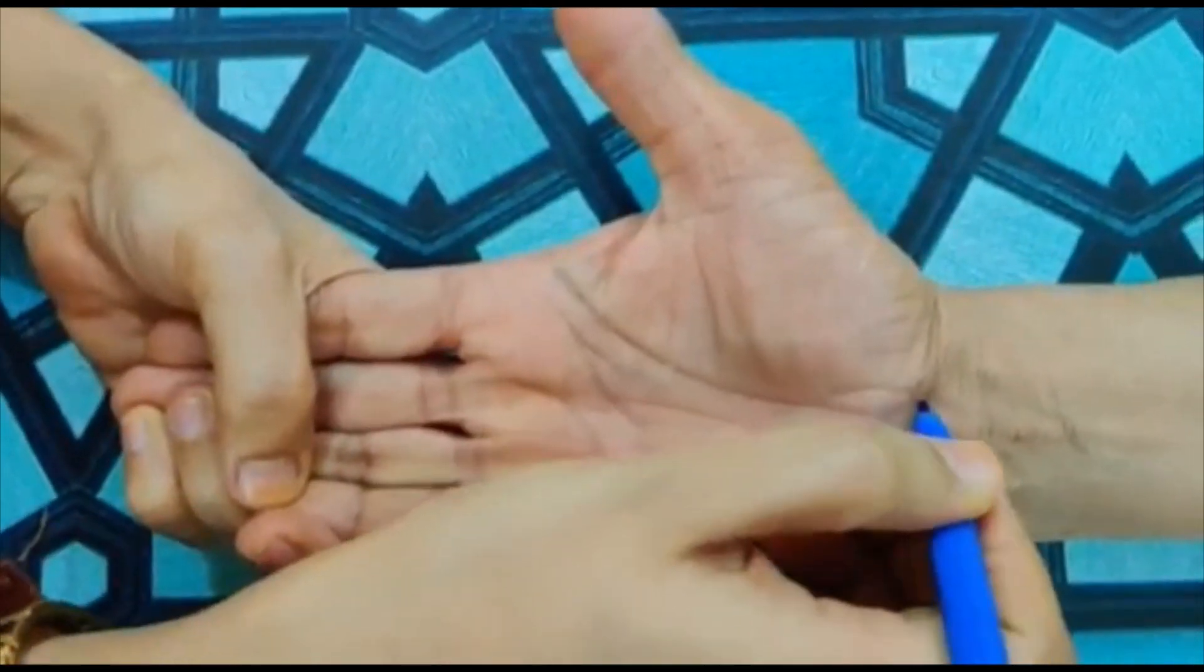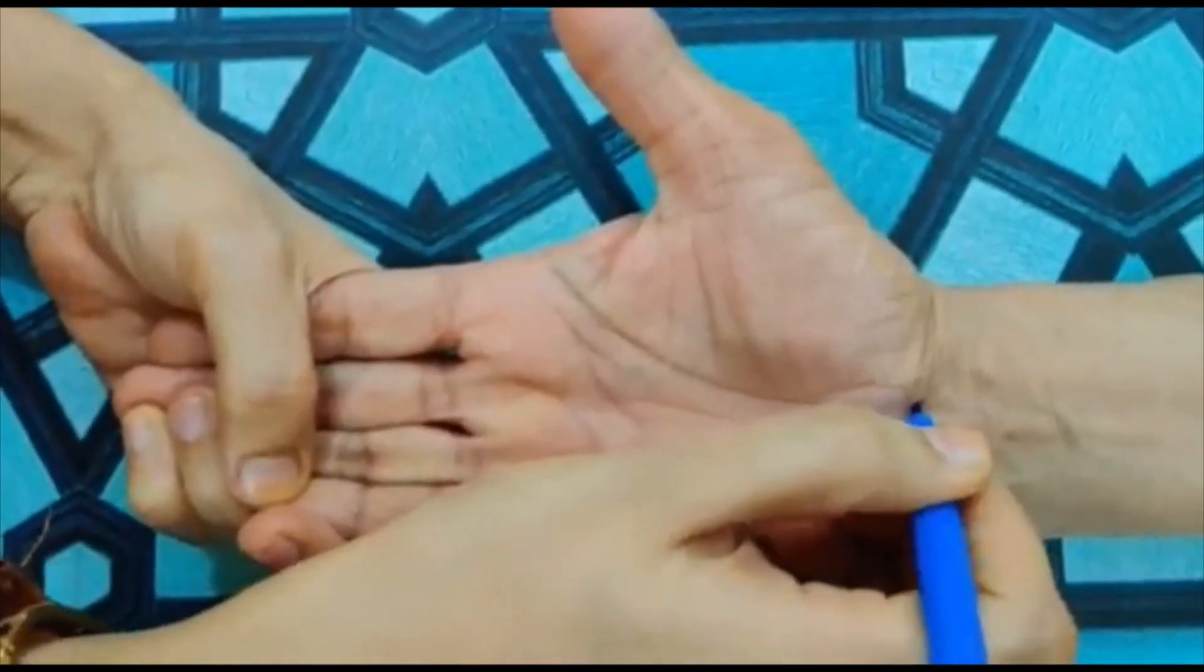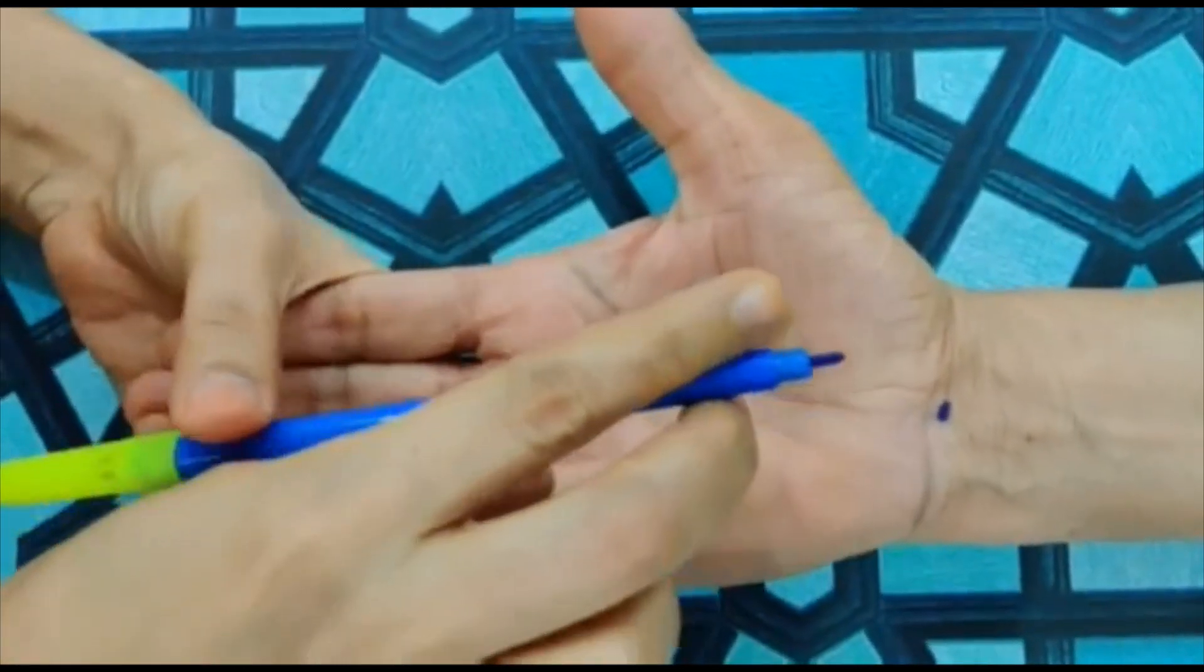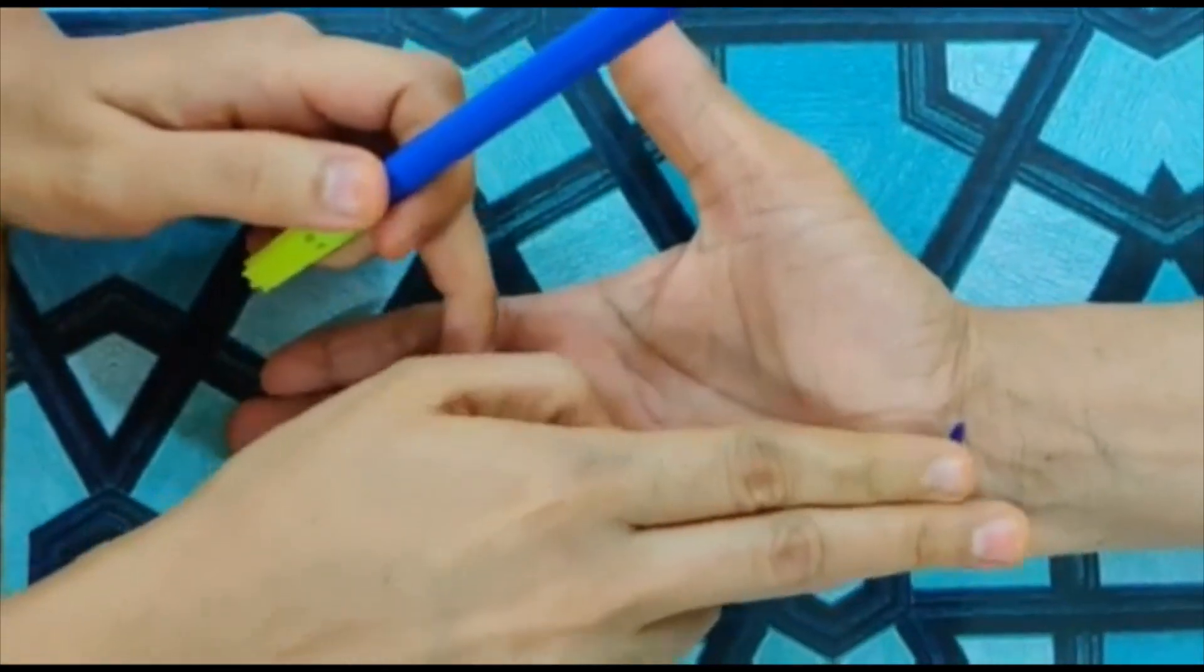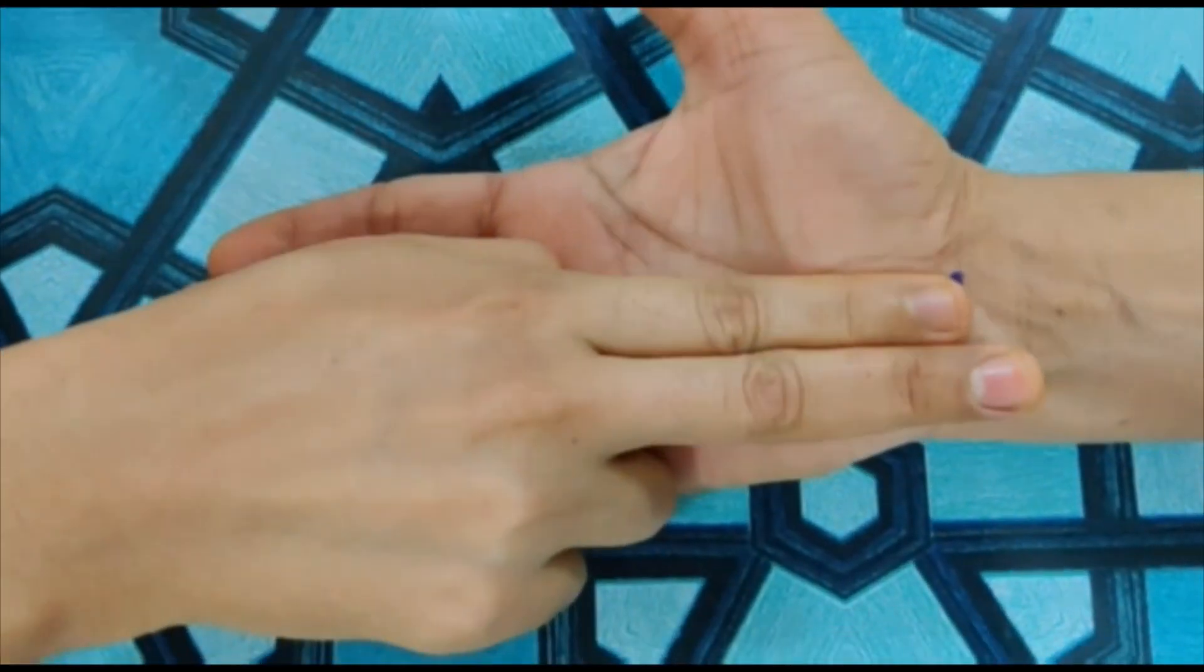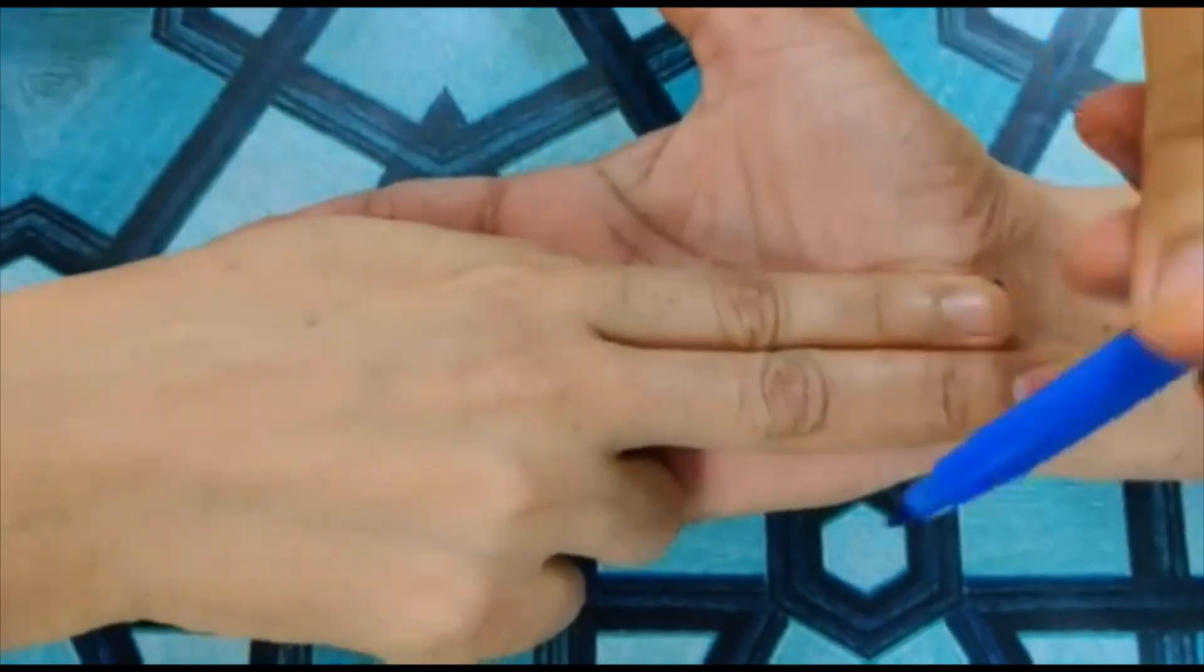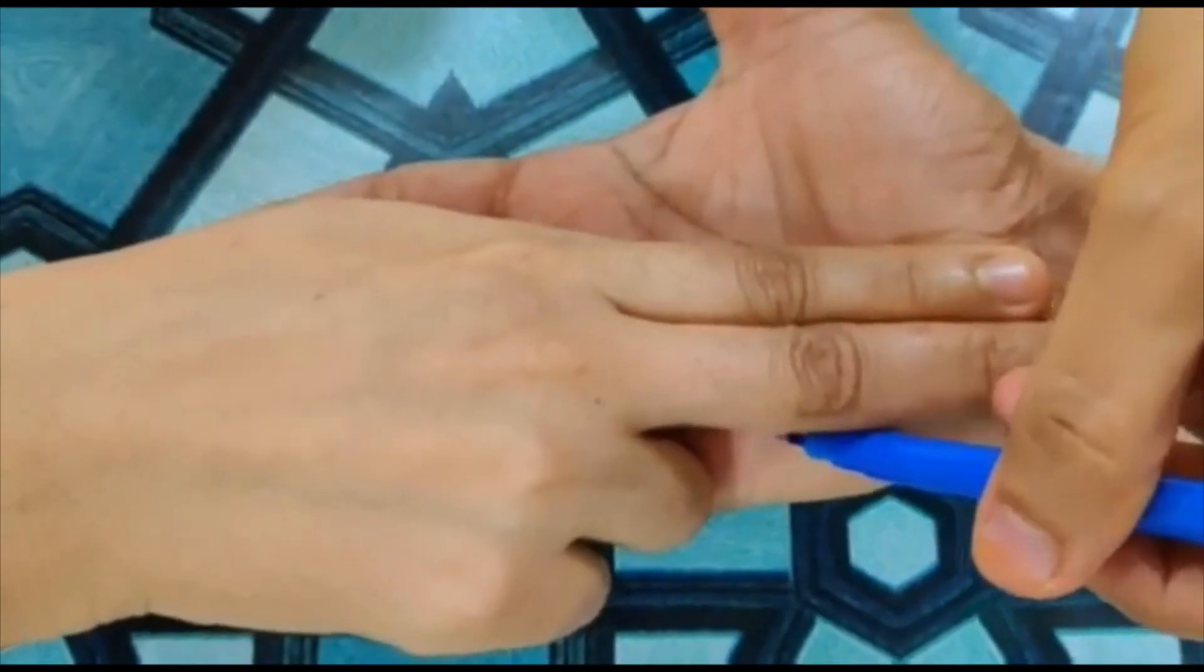We have to take the wrist center. Look at this. And here, we have to go two fingers vertically. Basically, we have to make a dot. We have to go towards the patient's hand left side. We have to draw the line.